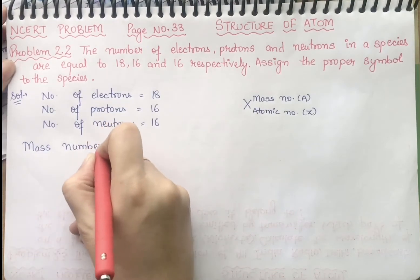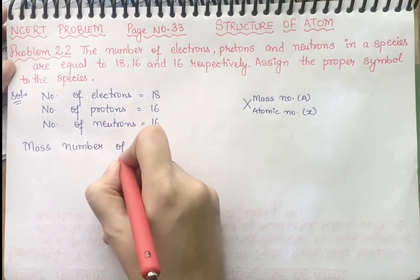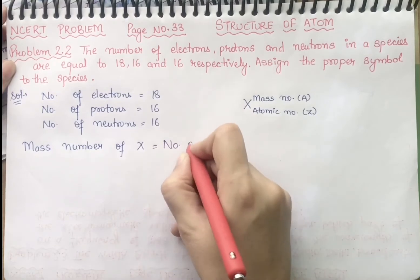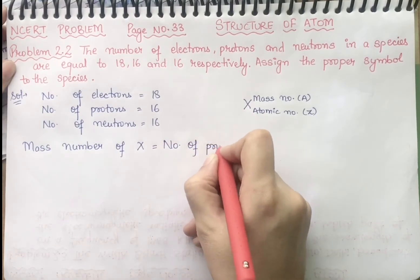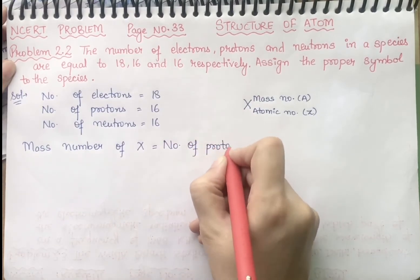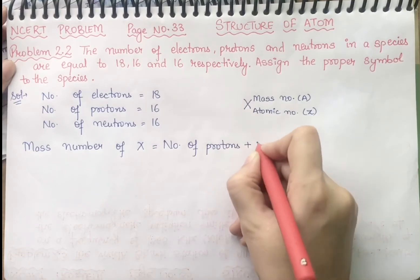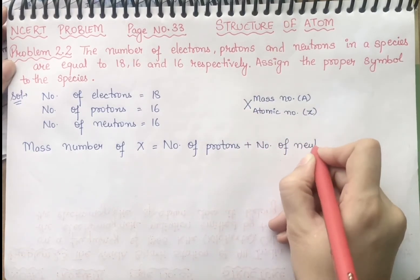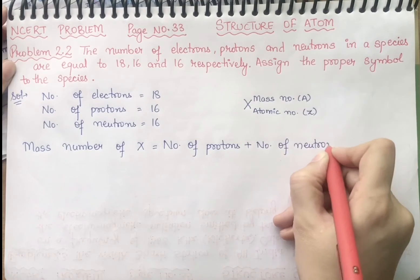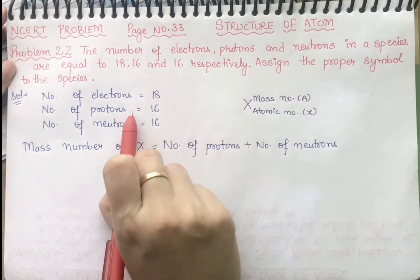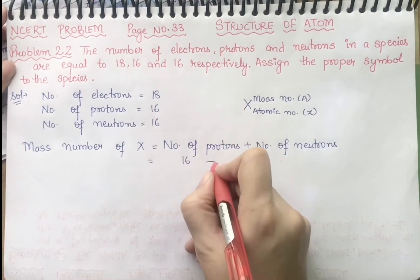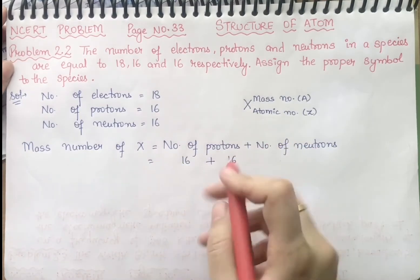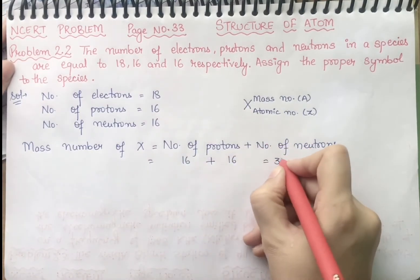Mass number of an element X equals number of protons plus number of neutrons. We are having number of protons 16 plus number of neutrons also 16, so the value will be 32. We are having mass number equal to 32.